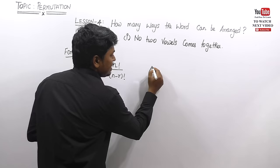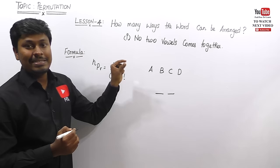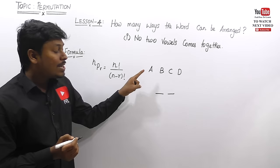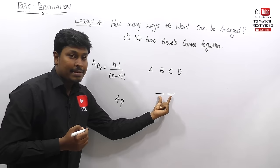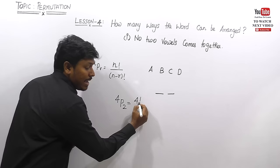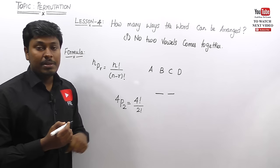There are four letters — A, B, C, D — and there are two places. We need to place these four letters into two places. How many ways can this be done? There are four total letters, so we write this as 4P2. The answer is 4 factorial divided by (4 minus 2) factorial, which is 2 factorial. So 24 divided by 2 equals 12.